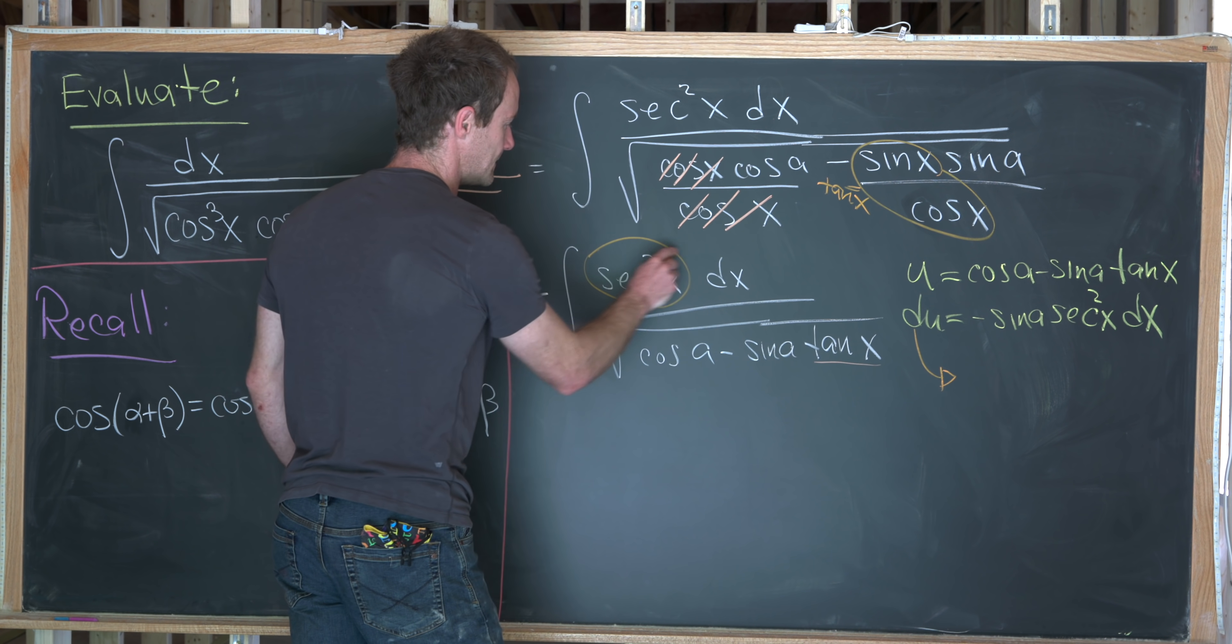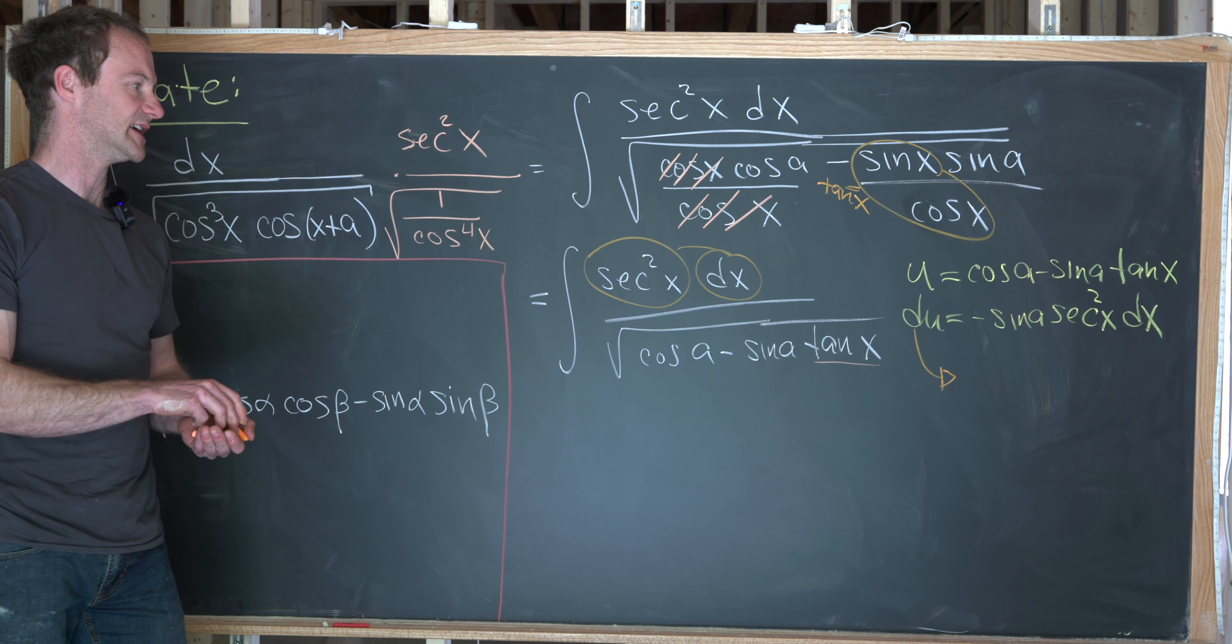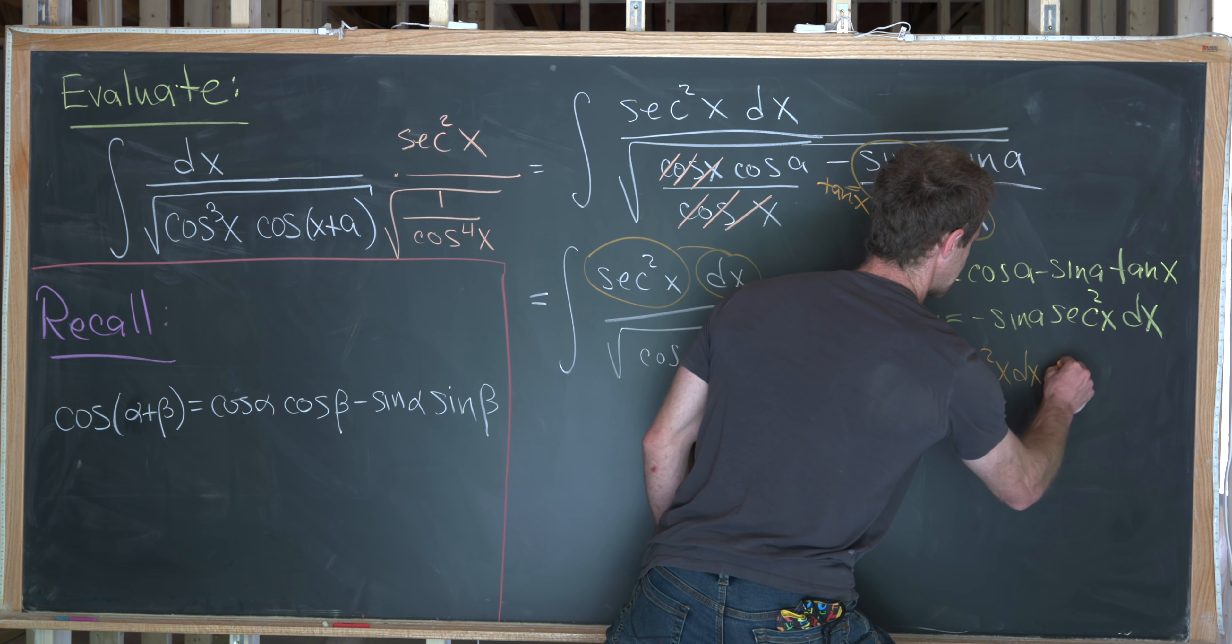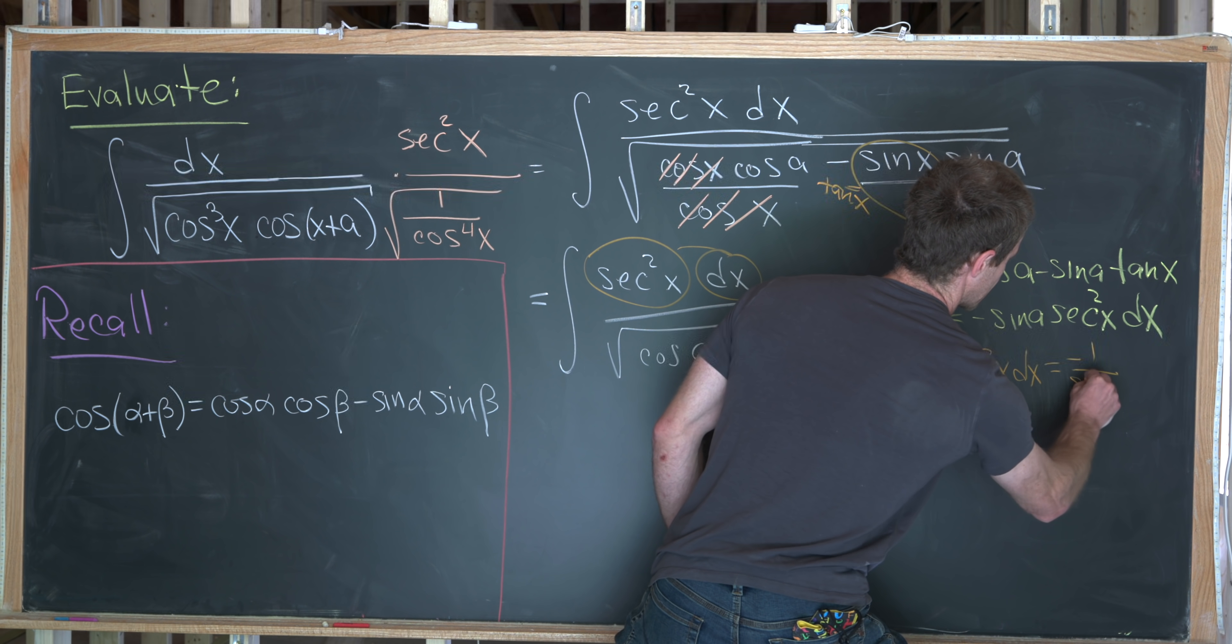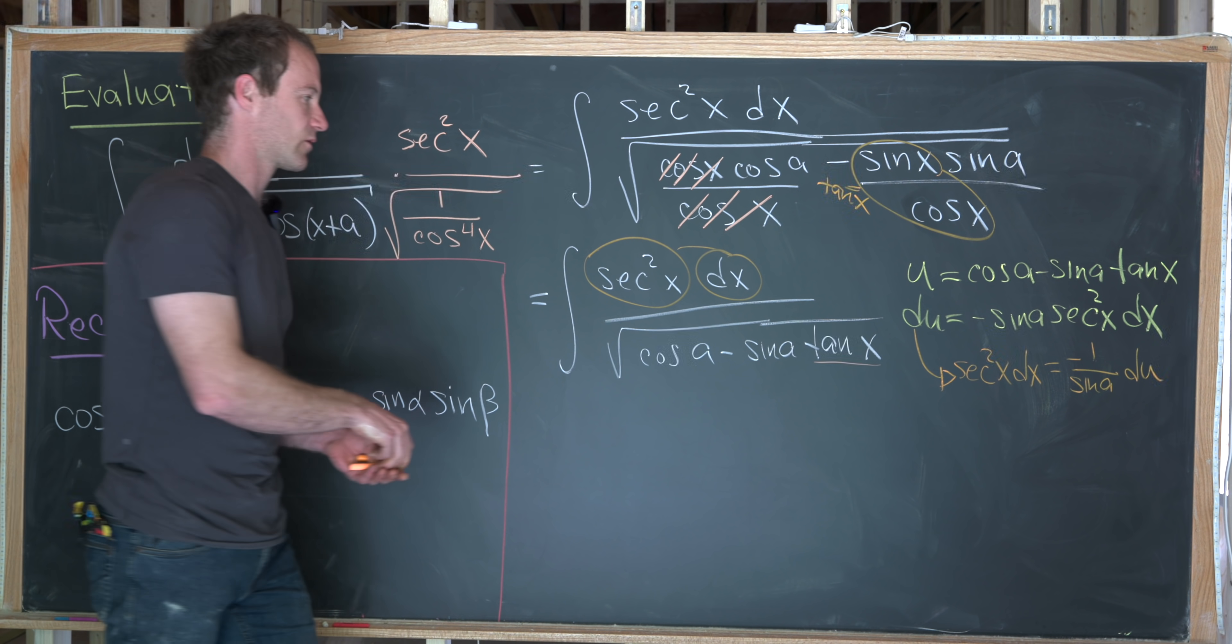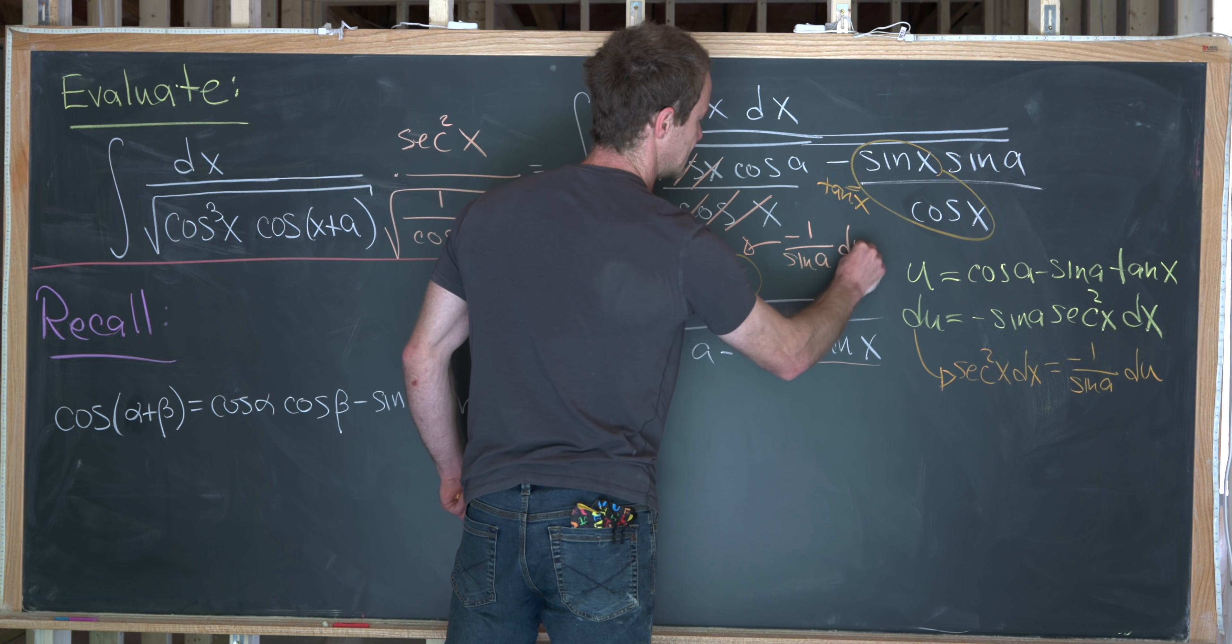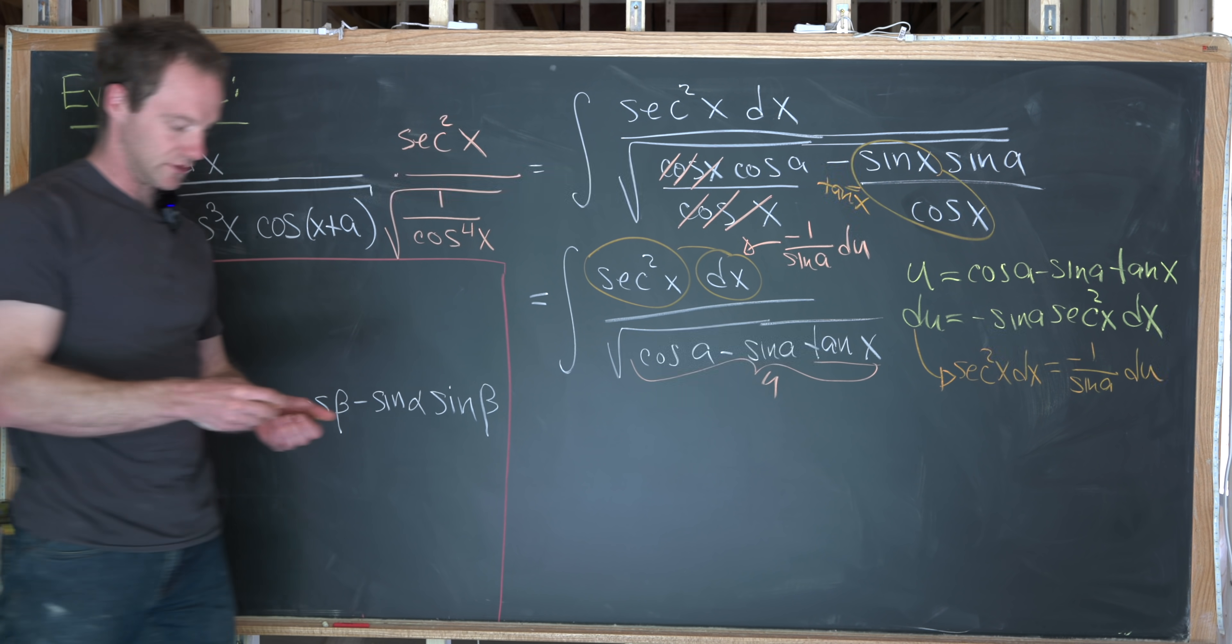keeping in mind that what we freely have outside of the square root is secant squared x dx to write secant squared x dx as minus one over sine a du. So in other words, we can take this object right here and make it minus one over sine a du. And then everything under this radical is just u.